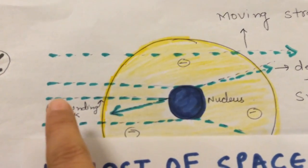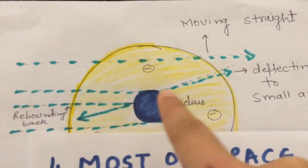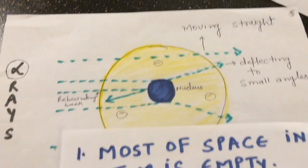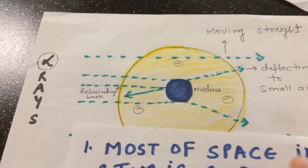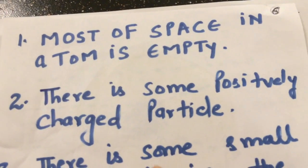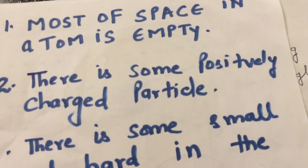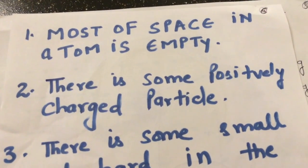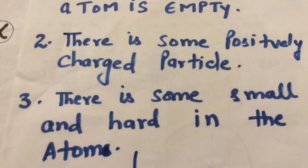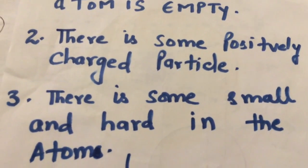Conclusion three: very few alpha particles rebounded back, which means there is something very hard — a hard dense mass — present inside the atom. So the three conclusions are: most space in the atom is empty, there is a positively charged particle inside the atom causing small-angle deflection, and there is a small hard dense mass that causes very few alpha particles to rebound back.